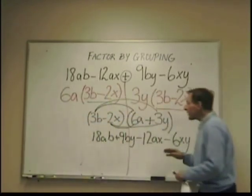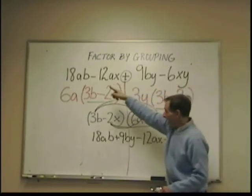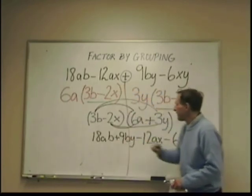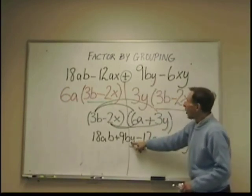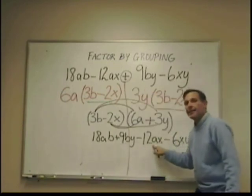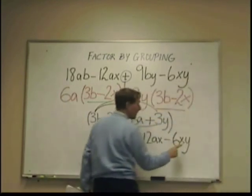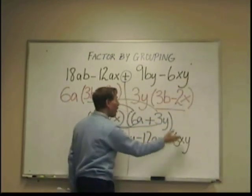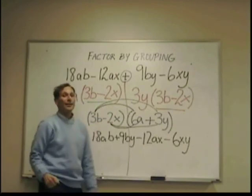Now, the order is a little different, but every element on top is here. There's my eighteen a b positive. There that is. Nine b y. Nine b y. Positive. Negative twelve a x. There's the negative twelve a x. Negative six x y. There's the negative six x y. So, FOIL proves that these are the two correct factors.